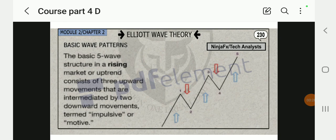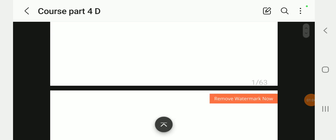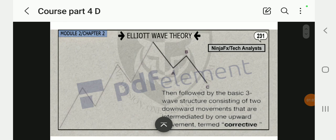What are basic wave patterns? The basic five-wave pattern structure in a rising market or uptrend consists of three upward movements that are intermediated by two downward movements termed impulsive or motive. You can see the three blue arrows going up, those are the motives. The two red arrows going down, those are the corrective. So it's corrective and motive, corrective and motive. By the time we cover this topic, you gotta be familiar with all the patterns.